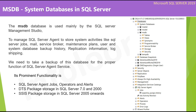We have another system database called MSDB. MSDB keeps all the information about SQL Server Agent activity. The MSDB database is used mainly by SQL Server Management Studio to manage SQL Server Agent and to store system activities like SQL Server jobs, mail, service broker, maintenance plans, user and system database backup history, replication information, and log shipping. We need to take a backup of this database for the proper function of SQL Server Agent Service. Its prominent functionality includes SQL Server Agent jobs, operators and alerts, DTS package storage in SQL Server 7.0 and 2000, and SSIS package storage in SQL Server 2005.